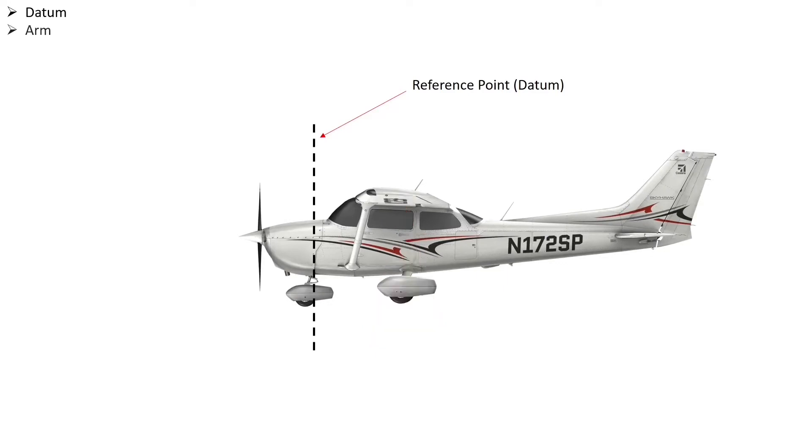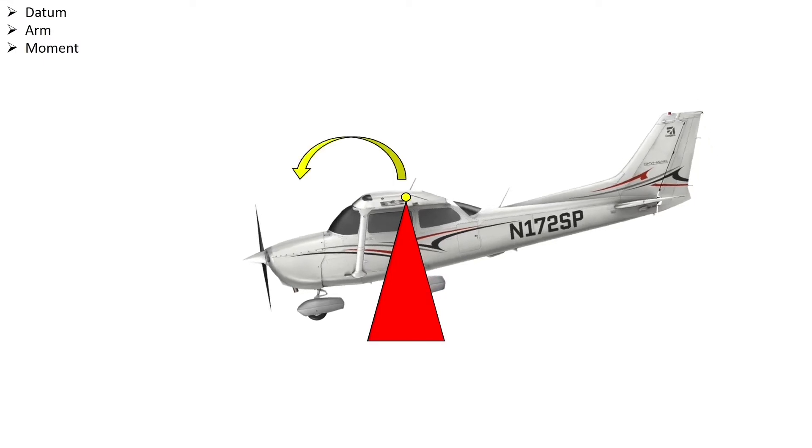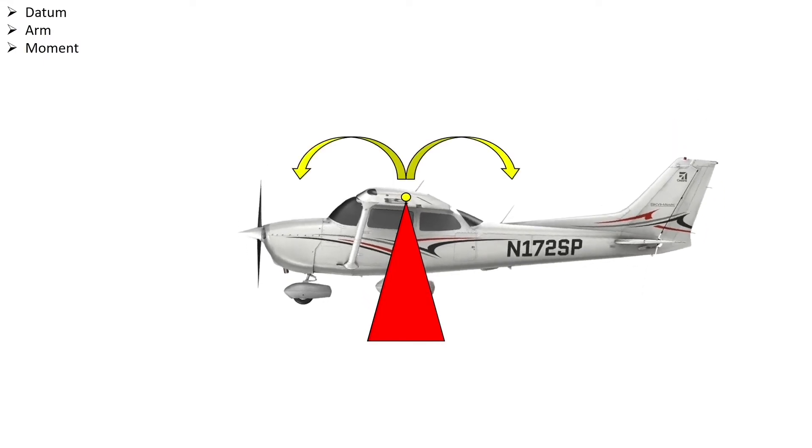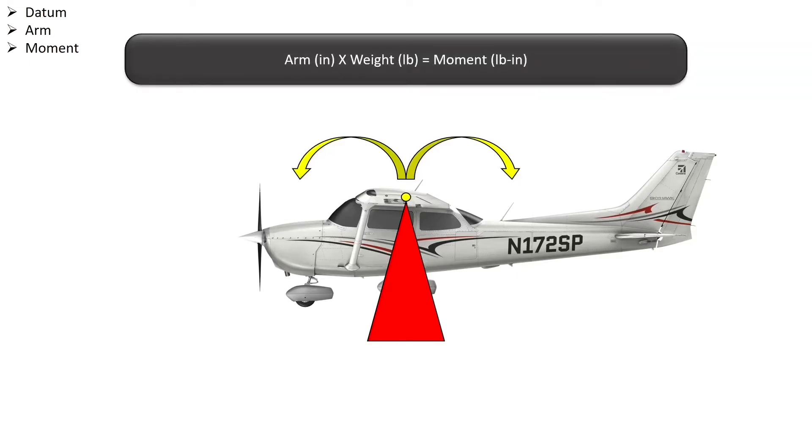The arm is the distance of a weight measured in inches from the datum. Arms forward of the datum have a negative value, while aft arms have a positive value. A moment is a force that tries to cause rotation about the centre of pressure and is the product of the arm in inches and the weight in pounds. Moments are generally expressed in pound inches.